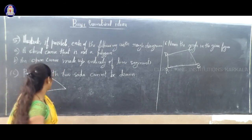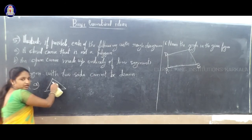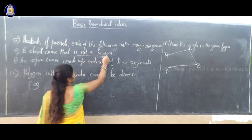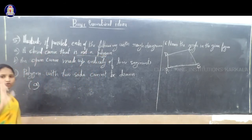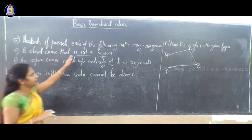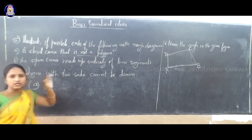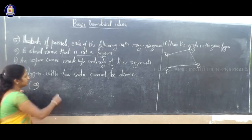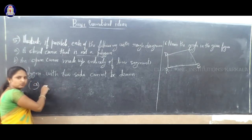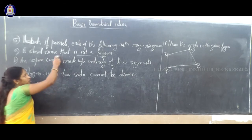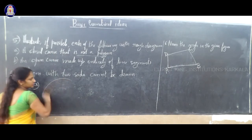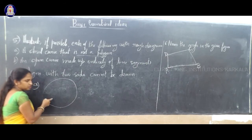The figure should be closed but should not be a polygon. If I draw triangle, quadrilateral, pentagon, hexagon, they are all polygons. So if I draw a circle — round like this — this is not a polygon. This is a closed figure but it is not a polygon, because here I have drawn a curve without any line segment.